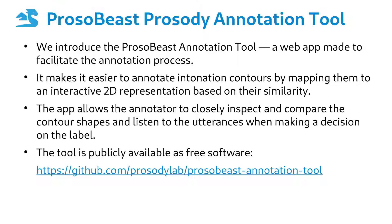We introduced the Prosobeast annotation tool, a web app made to facilitate the annotation process. It makes it easier to annotate intonation contours by mapping them to an interactive 2D representation based on their similarity. The app allows the annotator to closely inspect and compare the contour shapes and listen to the utterances when making a decision on the label. The tool is publicly available as free software.